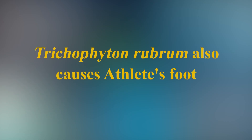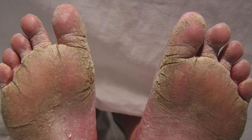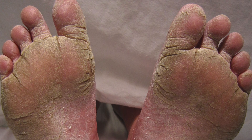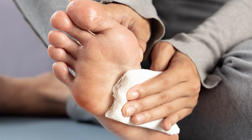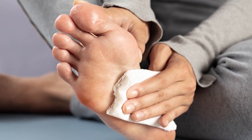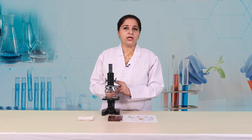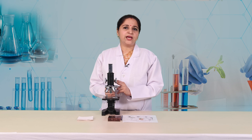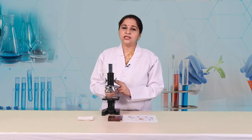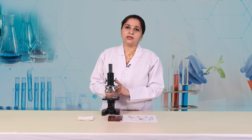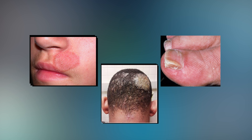Trichophyton rubrum also causes athlete's foot, or tinea pedis, that usually begins between the toes. It commonly occurs in people whose feet become very sweaty when confined within tight-fitting shoes. Signs and symptoms of athlete's foot include a scaly rash that usually causes itching, stinging, and burning. These fungi can be transmitted by direct contact, by contact with infested particles of dead skin, nails, and hair shed by the host, and by contact with the fungal spores.